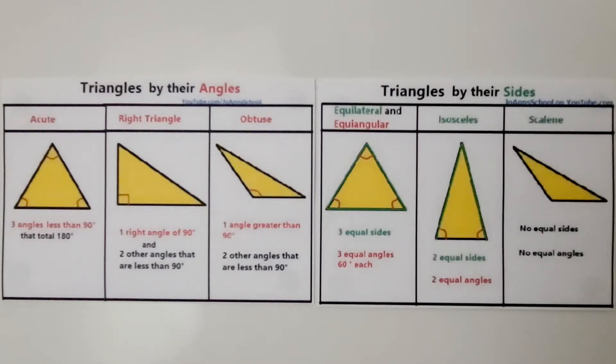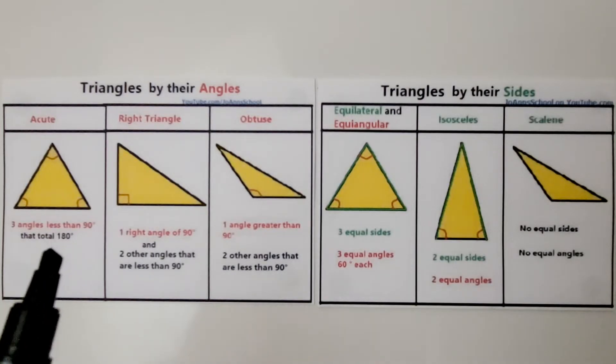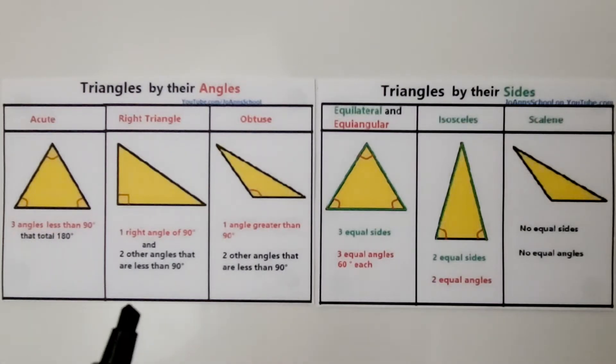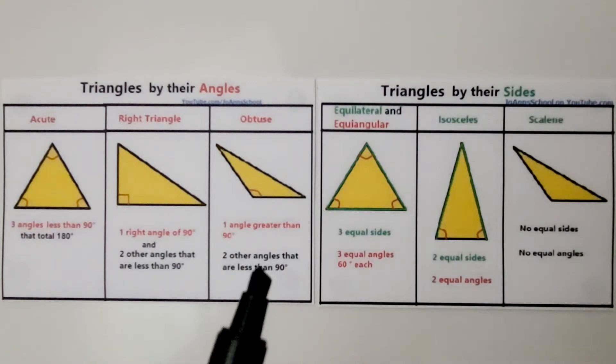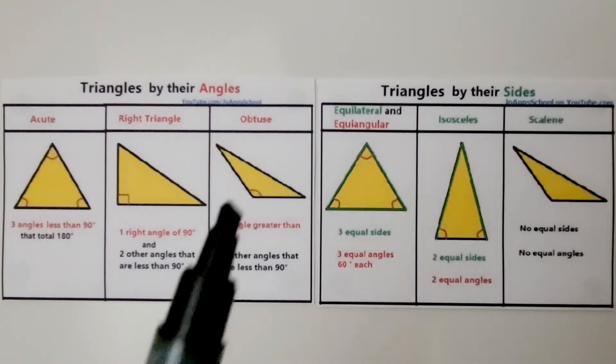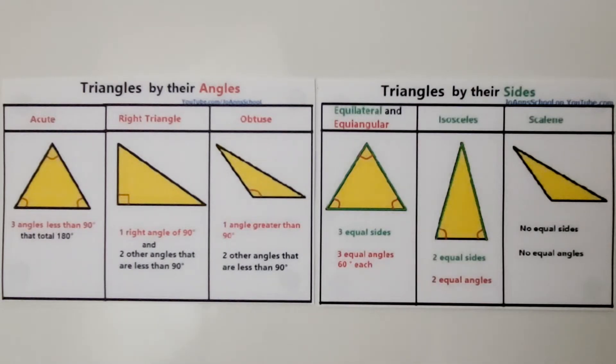We can categorize triangles by their angles. If there are three angles that are less than 90 degrees, that totals 180 degrees, it's an acute triangle. And if it has one right angle of 90 degrees, then it's a right triangle. And if it has one angle greater than 90 degrees, it's an obtuse triangle.